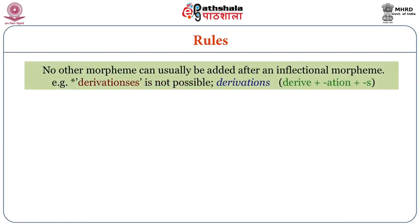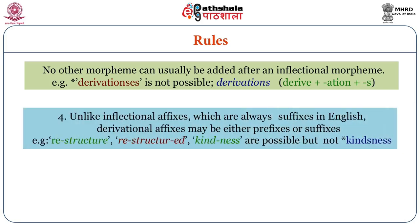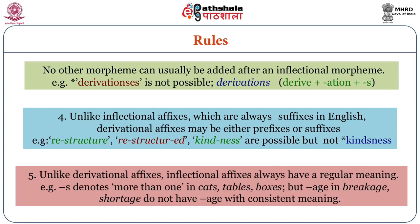There is a rule that no other morpheme can usually be added after an inflectional morpheme. For example, 'derivations' — adding further derivation — is not possible. Unlike inflectional affixes, which are always suffixes in English, derivational affixes may be either prefixes or suffixes. For example, 'restructure' or 'kindness' are possible. Unlike derivational affixes, inflectional affixes always have a regular meaning: '-s' denotes more than one in 'cats,' 'tables,' 'boxes'; but '-age' in 'breakage' or 'shortage' does not have a consistent meaning.